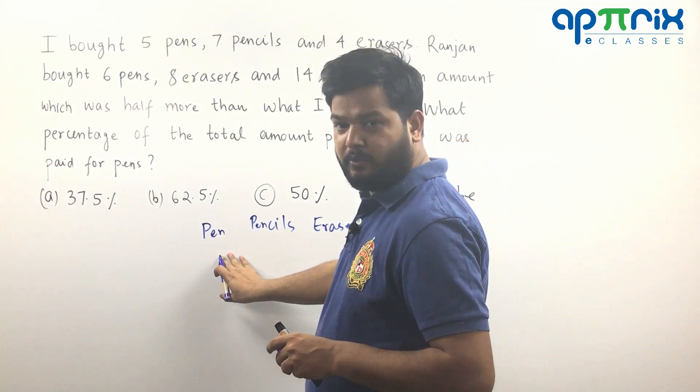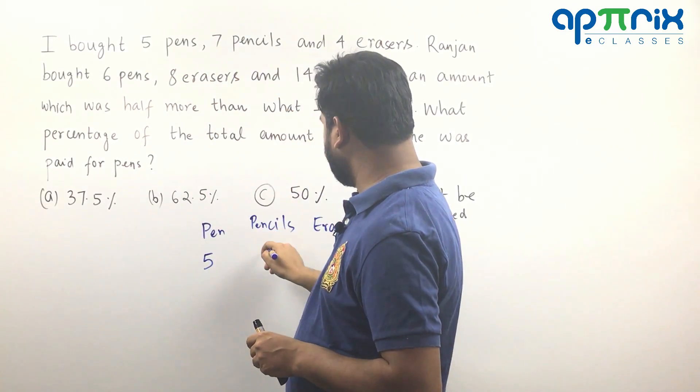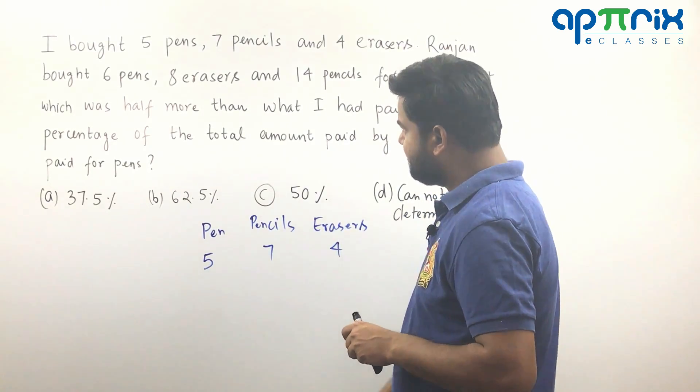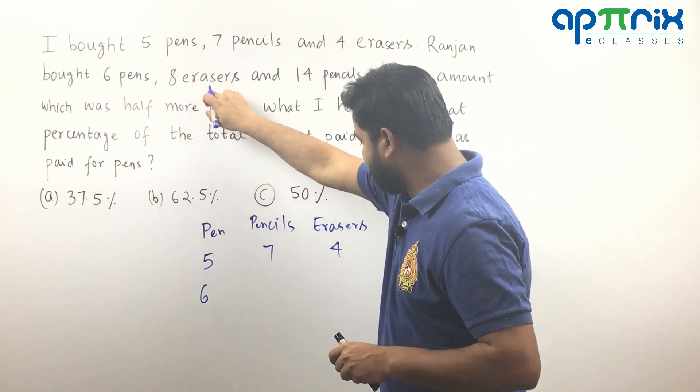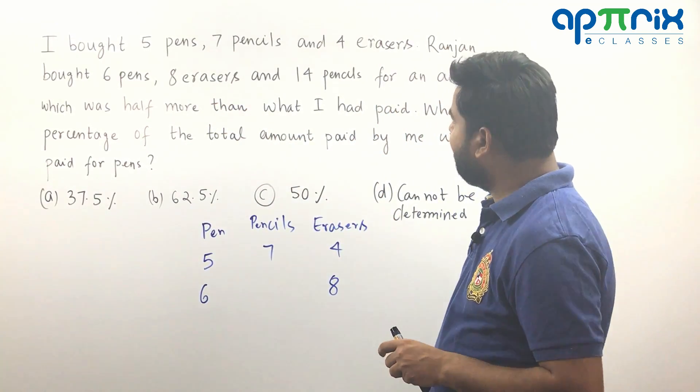So then what I'm going to write here, clearly understand this is five pens. So I'm writing five. Seven pencils. How many erasers? Four erasers. Then in the second case it is six pens. I will write six. Eight erasers. Try to understand. It is erasers. So I need to mention it here. And then 14 pencils. So I will write 14 pencils here.